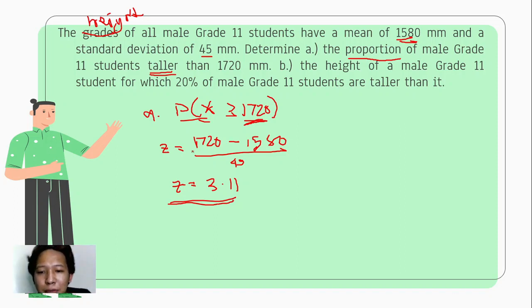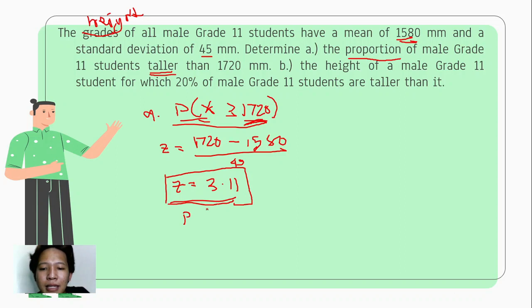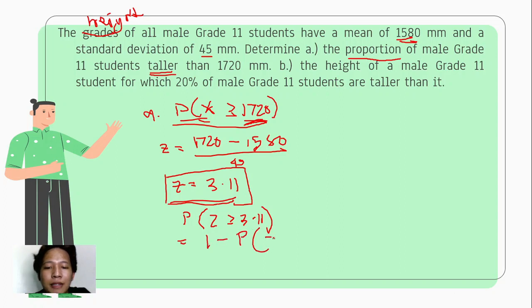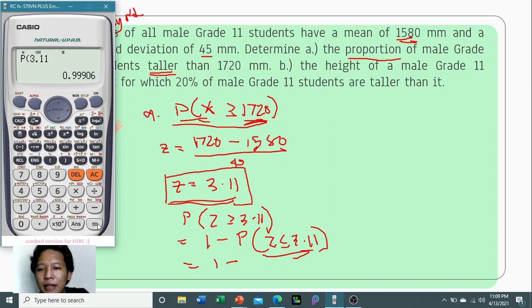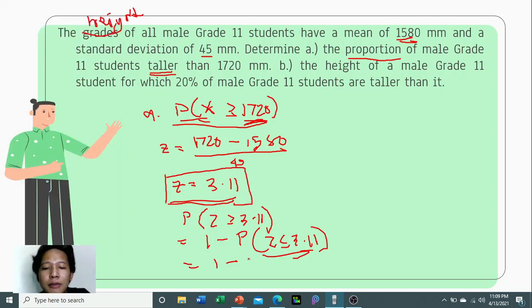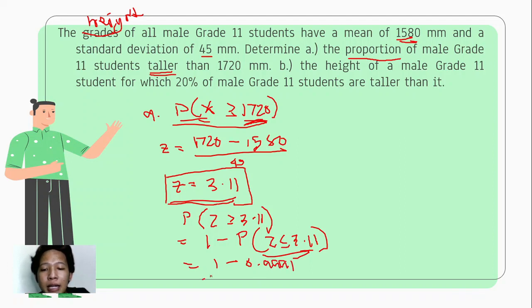Given the z-score, we need P(z ≥ 3.11). Since the table gives the area from the left, we compute 1 minus P(z ≤ 3.11). Using the calculator — shift, distribution, then the cumulative value at 3.11 — we get 0.9991. So the area to the right is 1 minus 0.9991, which equals 0.0009.